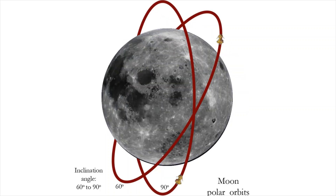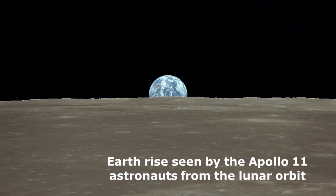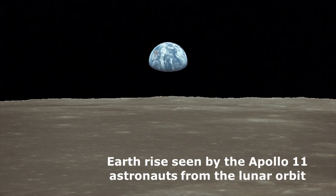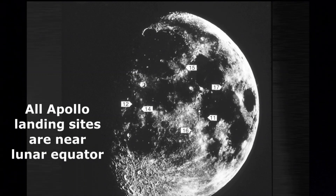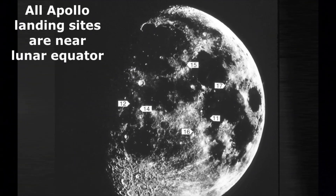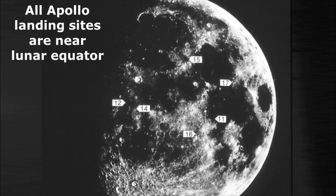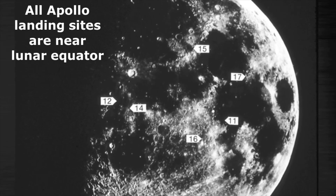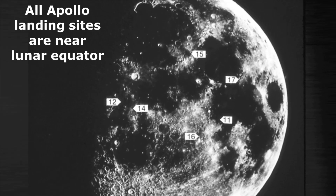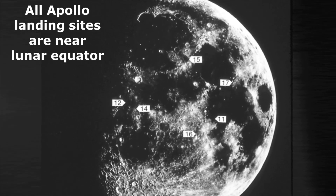Orbits with an inclination of about 60 to 90 degrees with respect to the lunar equatorial plane are called lunar polar orbits. For a spacecraft from Earth, reaching the lunar equatorial orbit or landing near the lunar equatorial plane requires less fuel and easier maneuvering compared with a lunar polar orbit or lunar polar area.